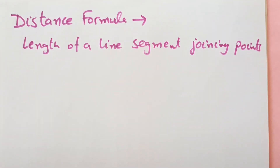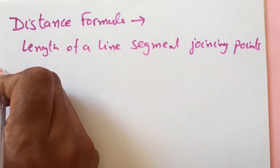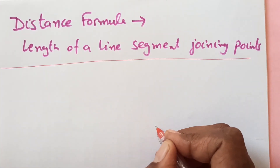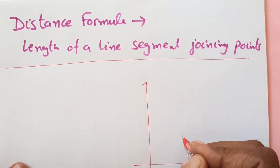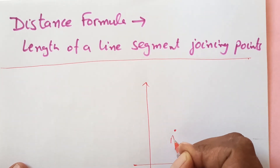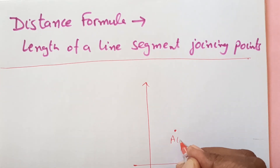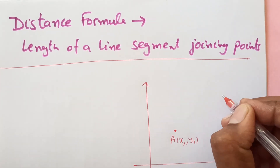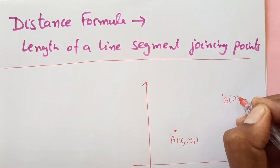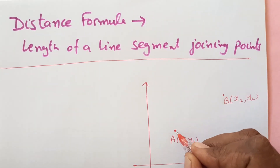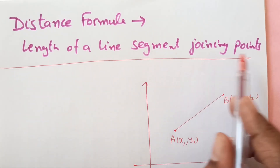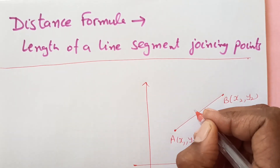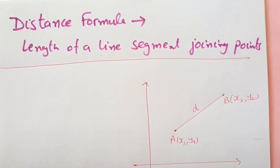For example, let us say I have this line segment — if AB is a line segment. Let us say we have this coordinate axis. We have a point A over here, the coordinates are x1, y1, and then we have a point B over here having coordinates x2, y2. We have a line joining these two points, so that means the length of the line segment joining two points — this is the distance that we are going to find out.